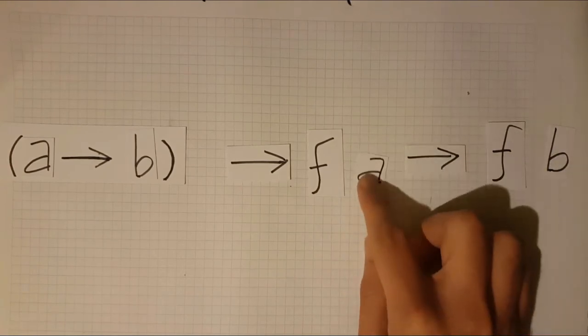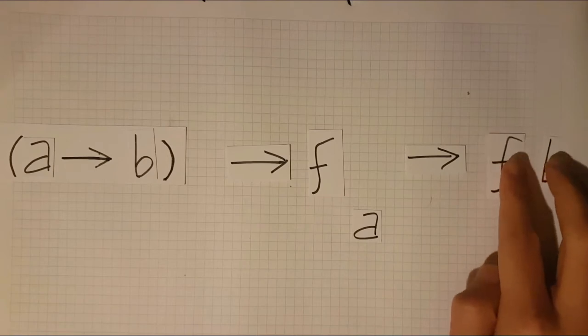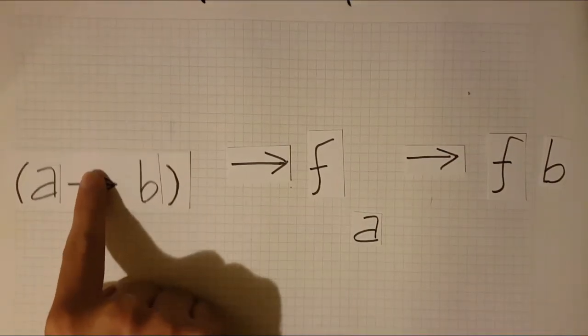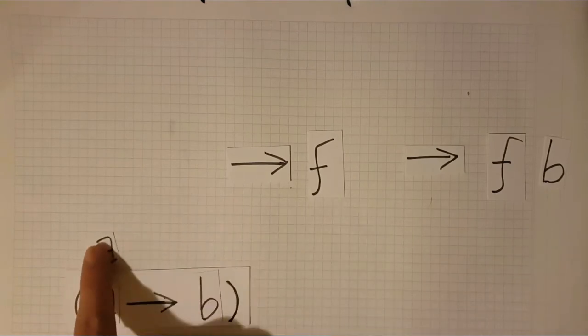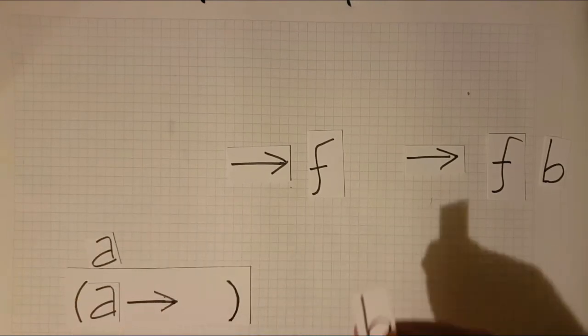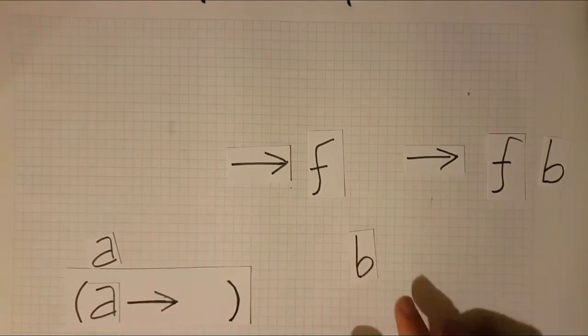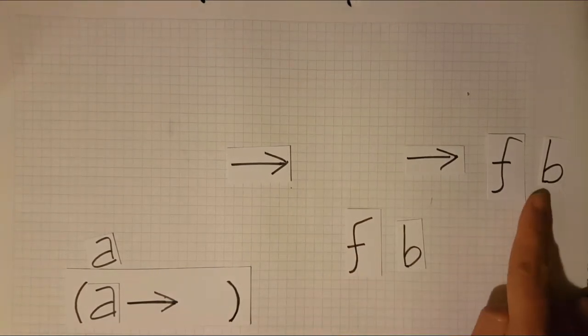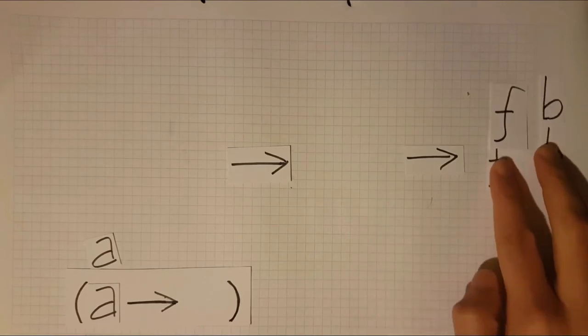But you need to return a structure of B. I can transform this A into a B. So you grab the function, transform the A, and now you have a B. And because now you have a B, you can put this B into a structure. And guess what? Now you have a structure of B.